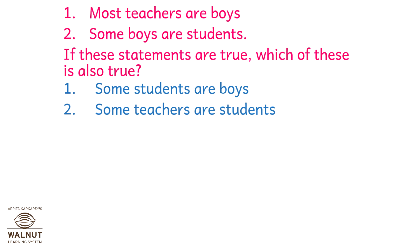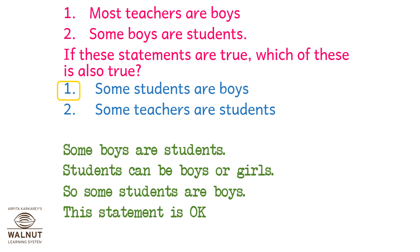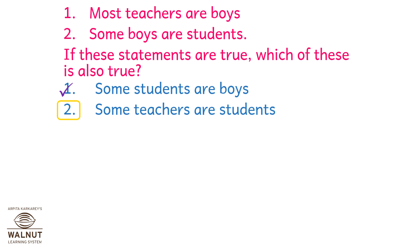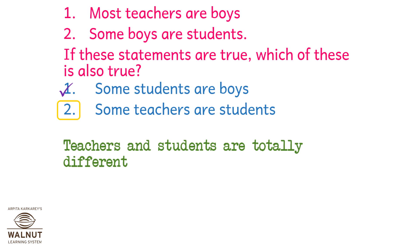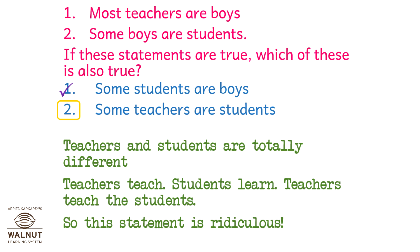Point 1: Most teachers are boys. Point 2: Some boys are students. Which of these is also true? Option A: Some students are boys — some boys are students, and students can be boys or girls, so some students are boys. This statement is correct. Option B: Some teachers are students — teachers and students are totally different; teachers teach while students learn. So this statement is wrong. That brings us to the end of this lesson.